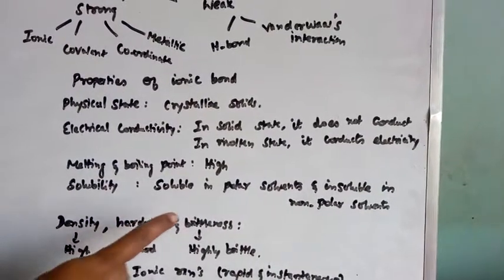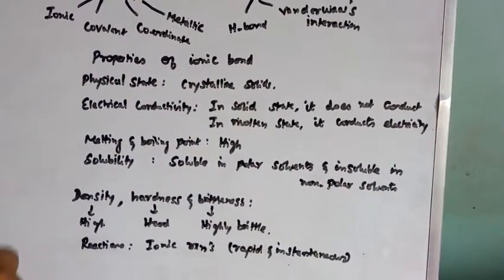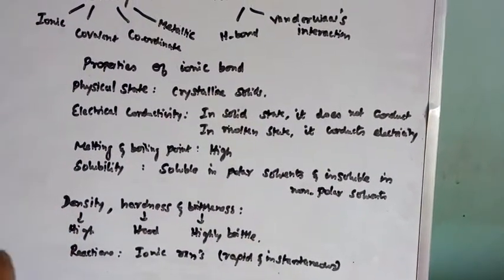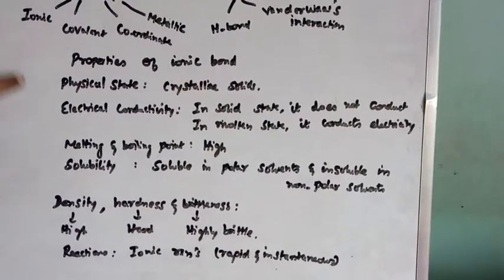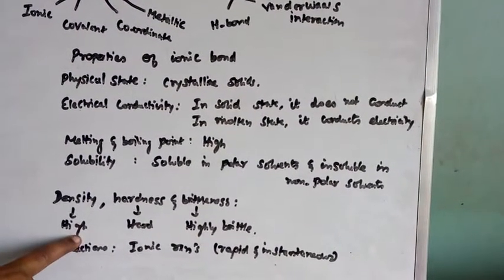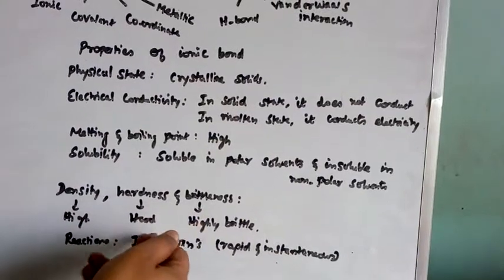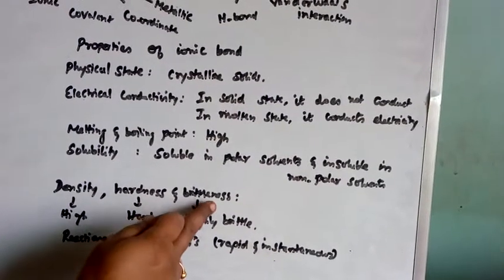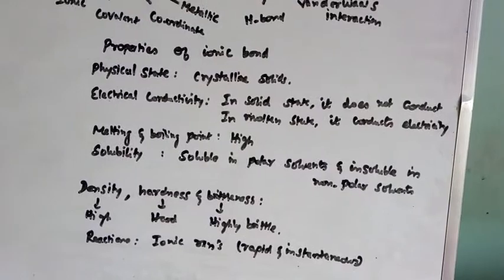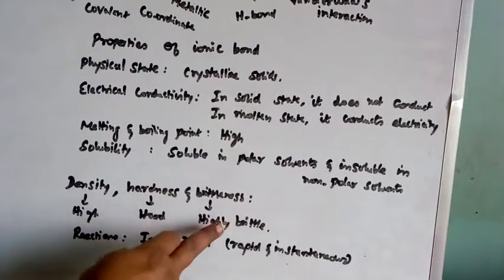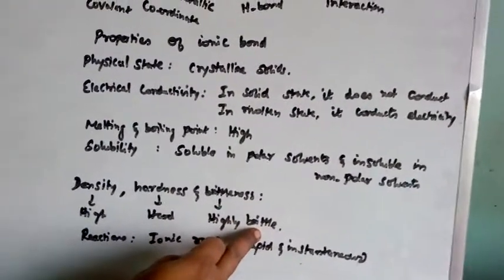Density, hardness and brittleness. Generally, as it is tightly packed, obviously ionic compounds possess high density. Moreover, it is hard in nature. Brittleness means it can be broken down into pieces. It is highly brittle in nature.